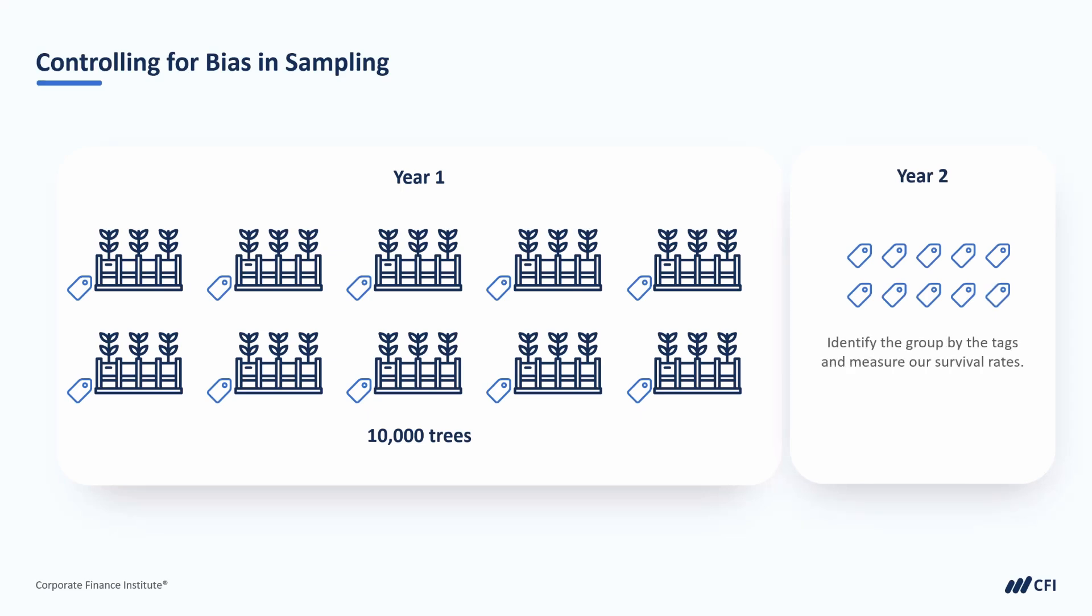Because everything was random, neither group should have had an advantage when it comes to the different variables in our population, like the planters, the terrain that they were planted on, or the amount of sunlight in their area.